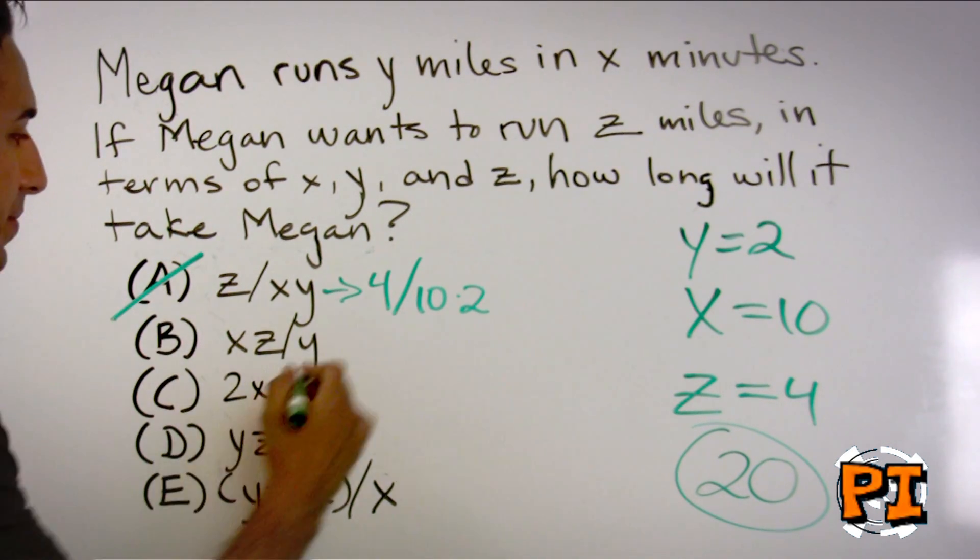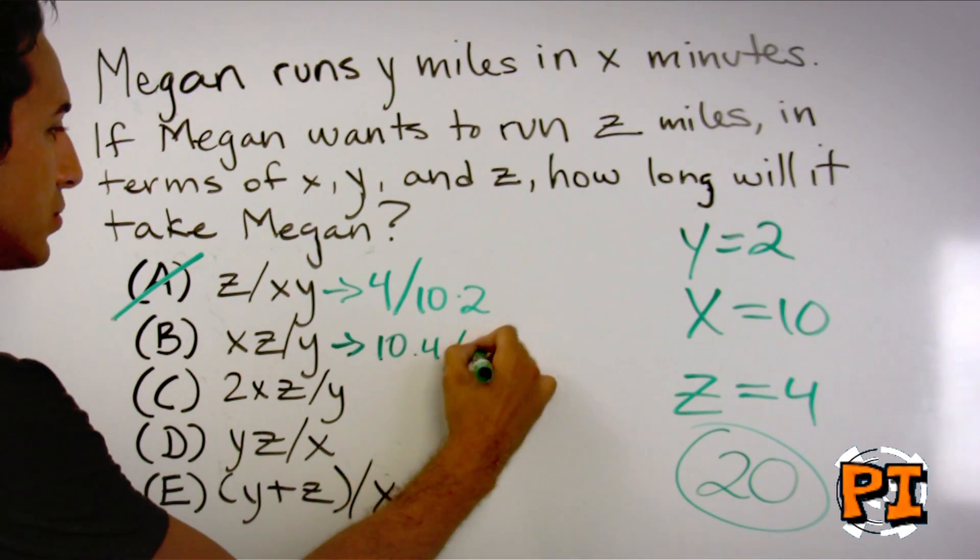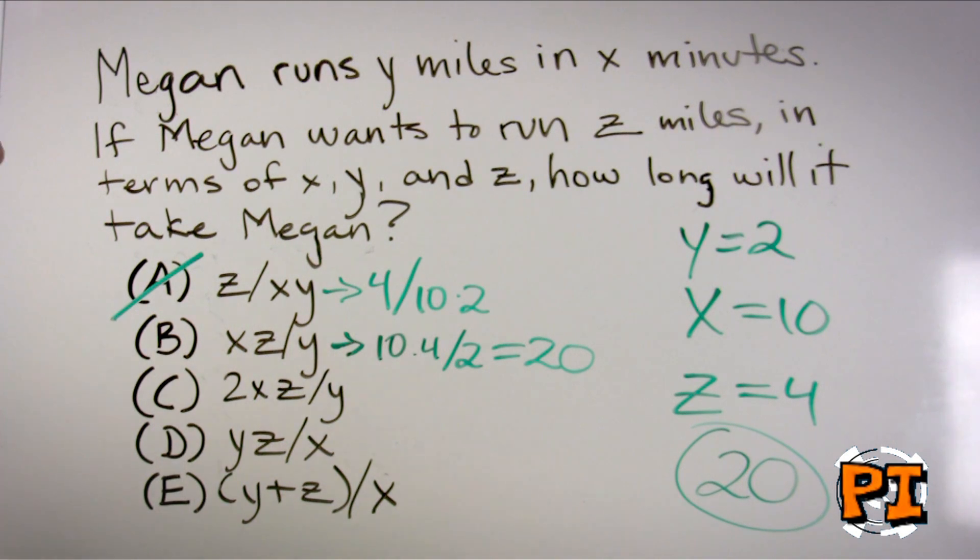Now we do the same thing for B. x is 10, z is 4, y is 2. This does equal 20. Answer choice B works. We do the same things for C, D, and E. We don't want to stop at B on the off chance that one of these answer choices might also work. Now if that does happen, all you have to do is pick a different set of numbers. It's just a fluke.